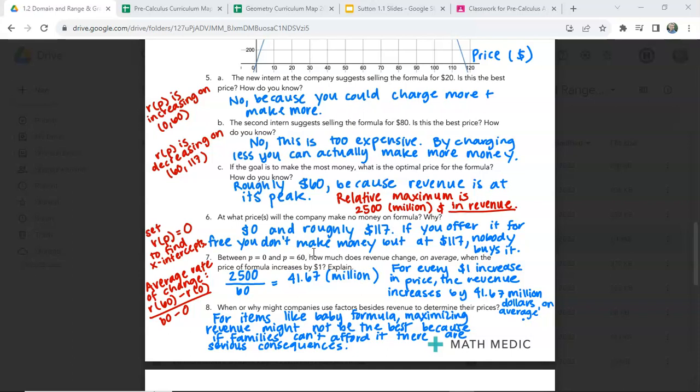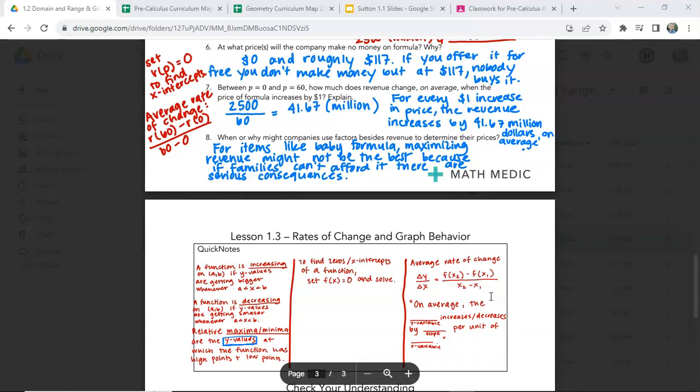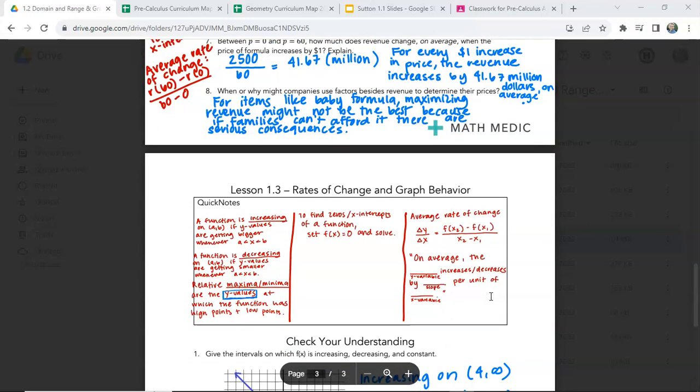Between $0 and $60, how much does revenue change? On average, when the price of formula increases by $1, we should get $41.67 million. So that's the rate of change here, R of 60 over R of 0, over 60 minus 0. That's how you calculate the average rate of change. So for every $1 increase in price, the revenue increases by $41.67 million. For items like baby formula, maximizing revenue might not be the best because if families can't afford it, there are serious consequences, right? That would be bad for our general population.